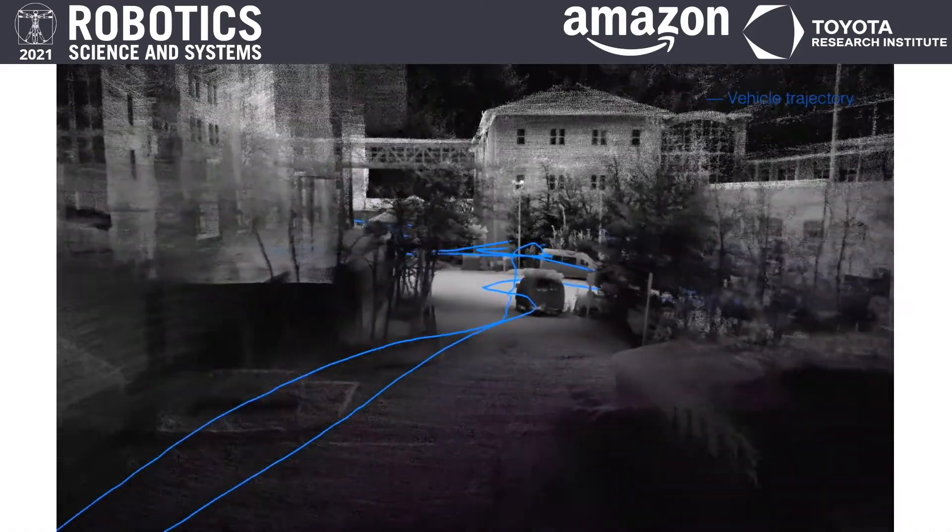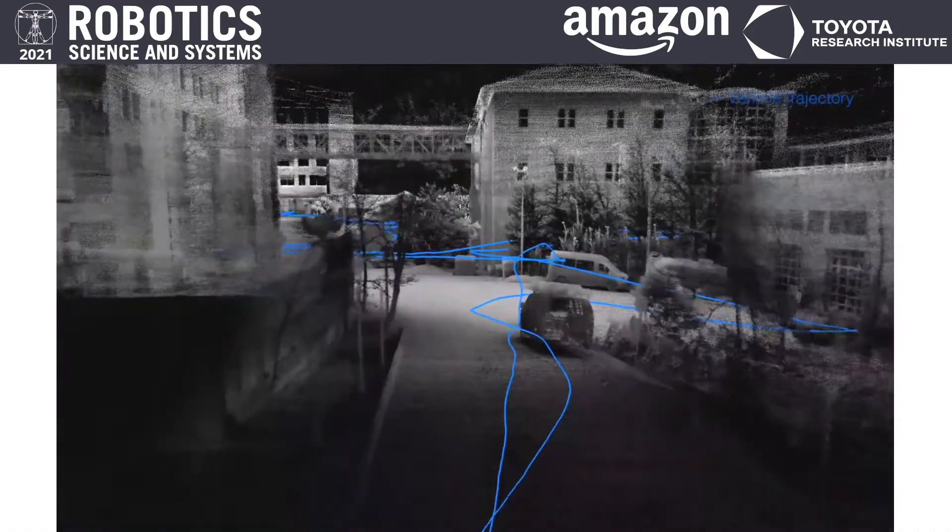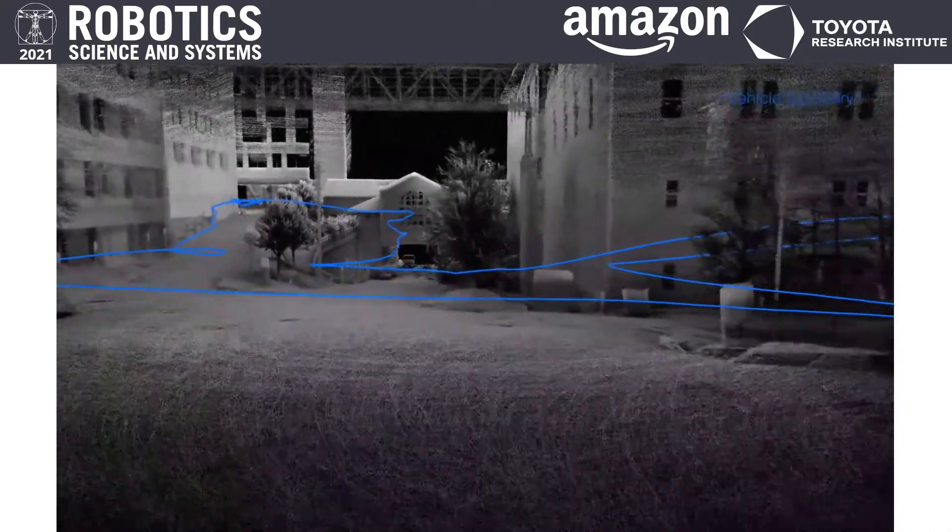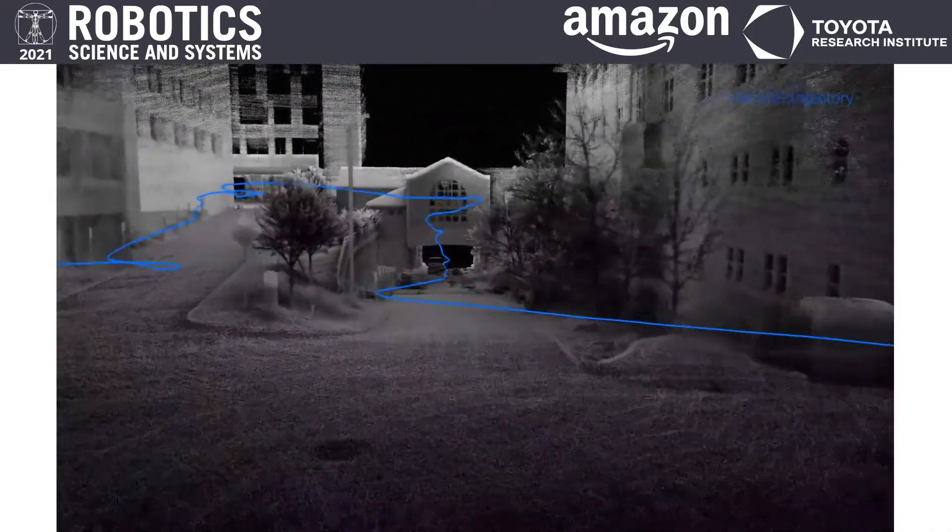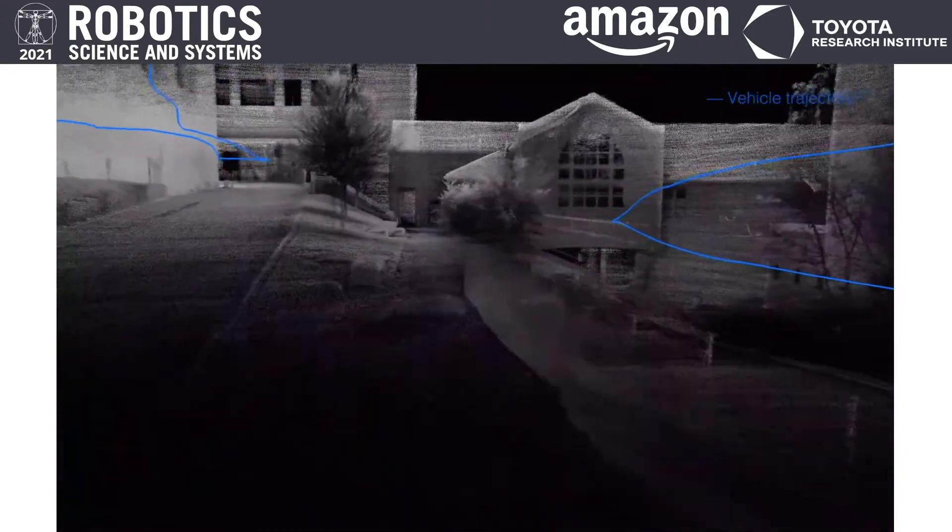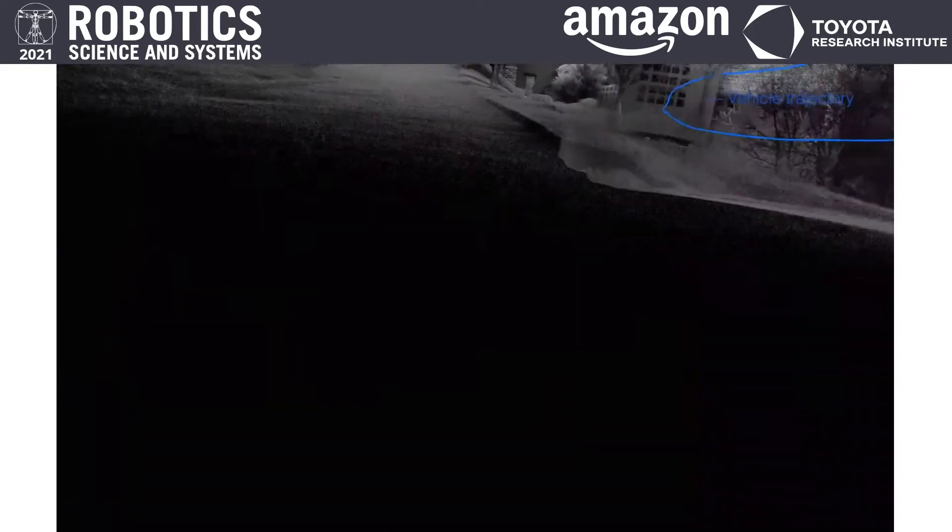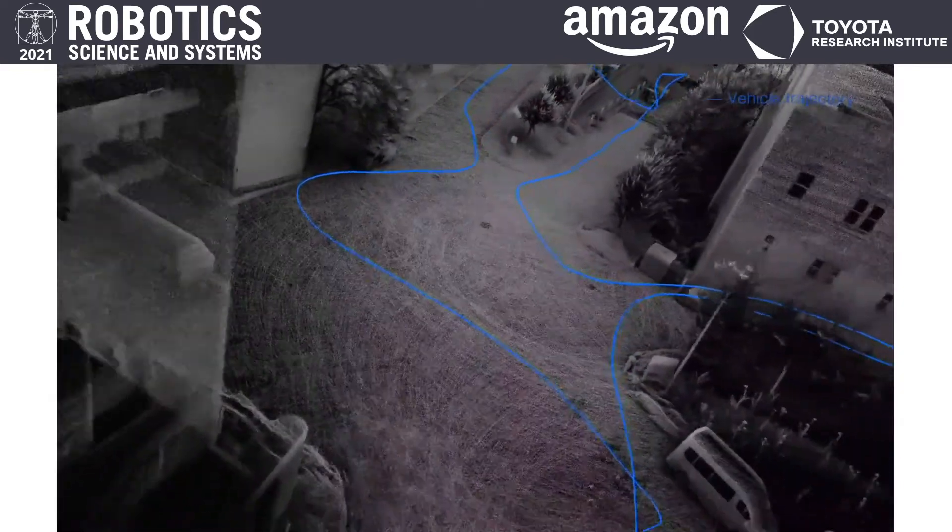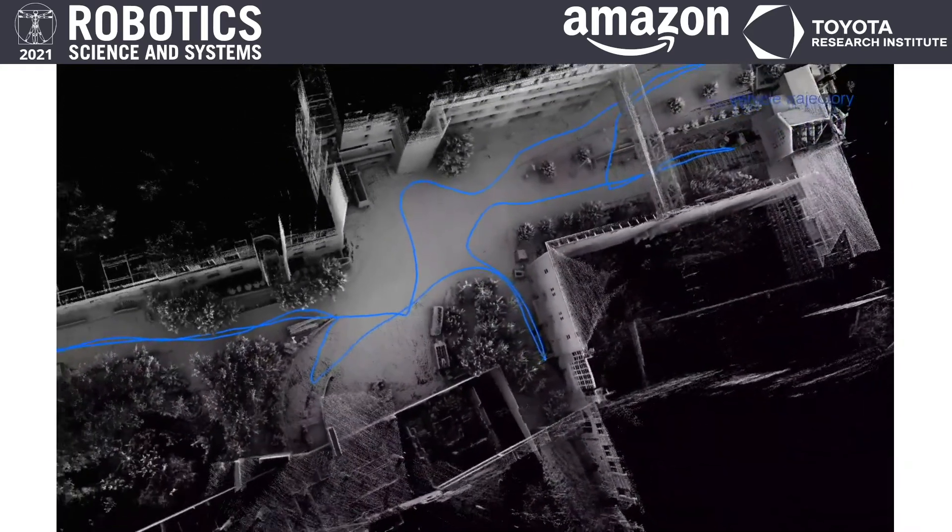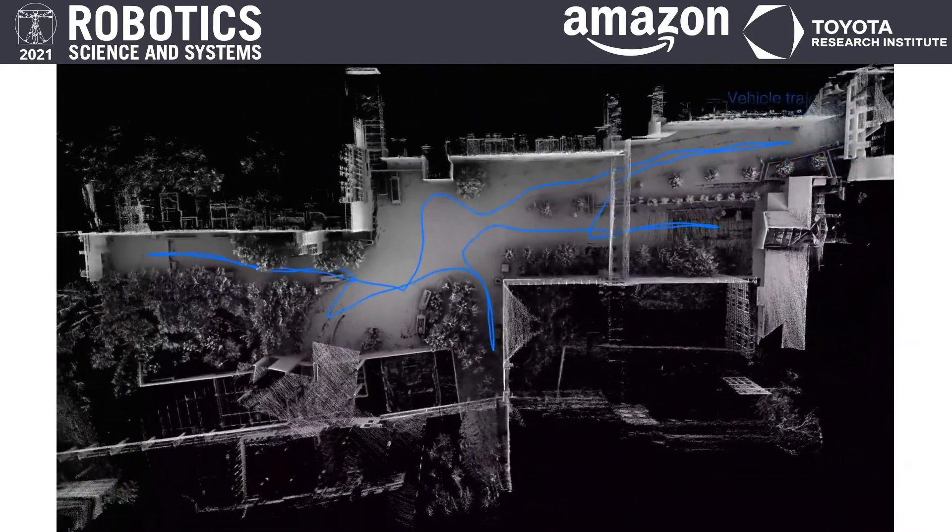Here, we are seeing the final map built by the system as the vehicle flew. No post-processing is involved. The environment is complex and three-dimensional as we can see. The flight lasted for five minutes. The vehicle traveled over 550 meters, and the maximum speed was 2.5 meters per second through the run.